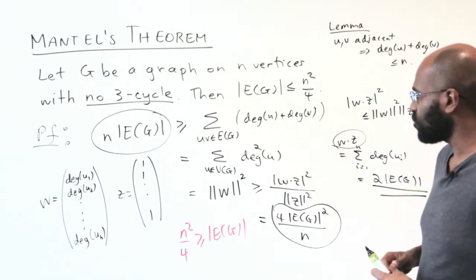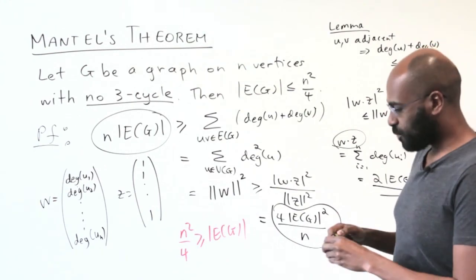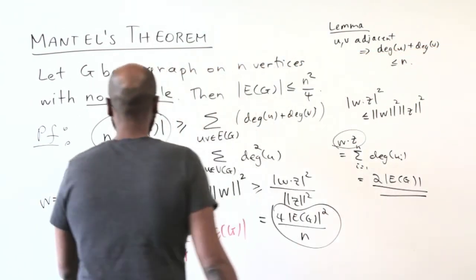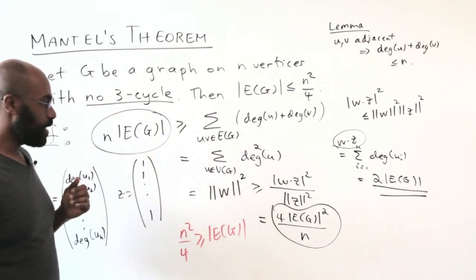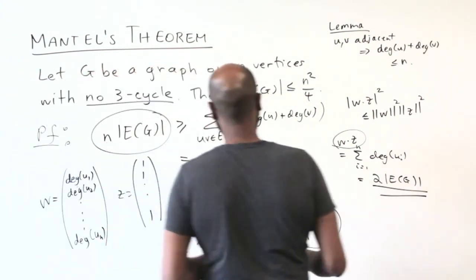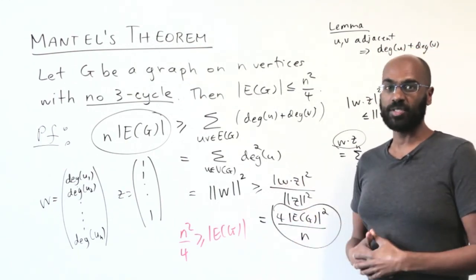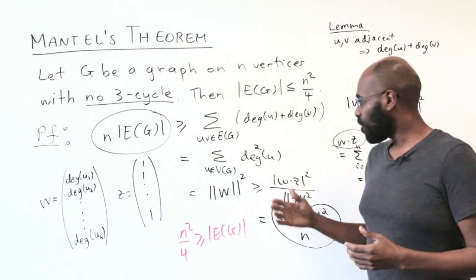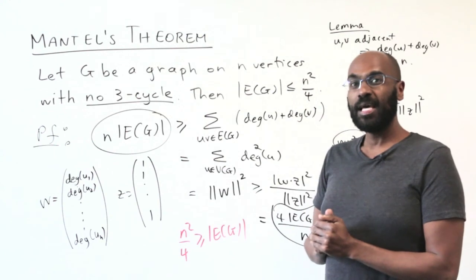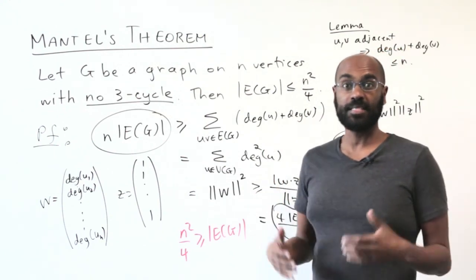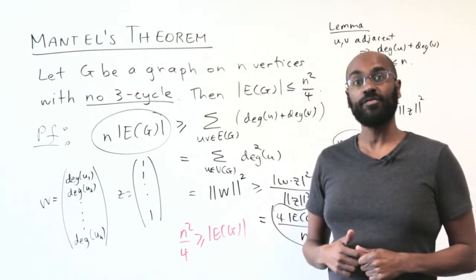This is a really fascinating argument. It turns out that when proving similar theorems involving upper bounds while avoiding cycles of larger length, this second proof is more amenable to adaptations. I hope you liked today's video exploring these two interesting proofs of the same theorem. If you did, click the like button, subscribe to the channel, and click the bell for notifications on future videos.